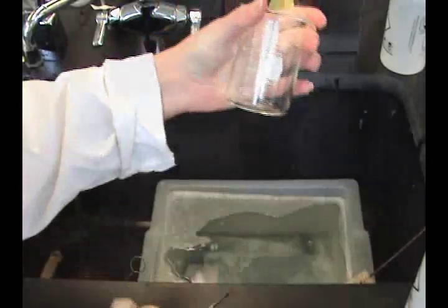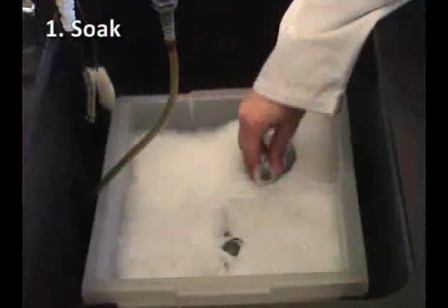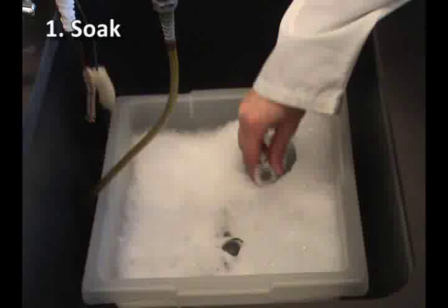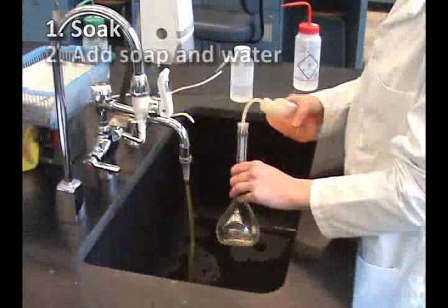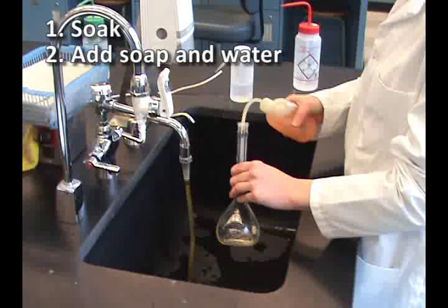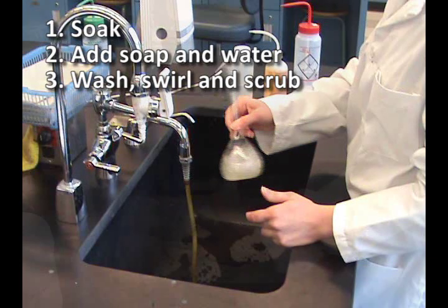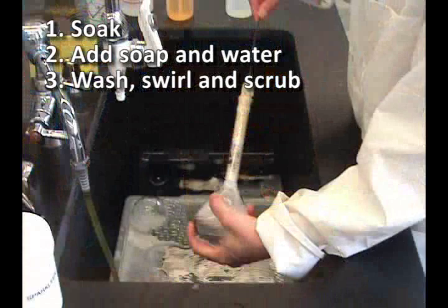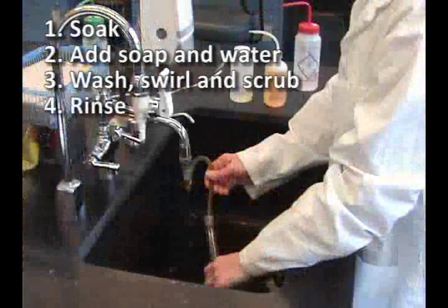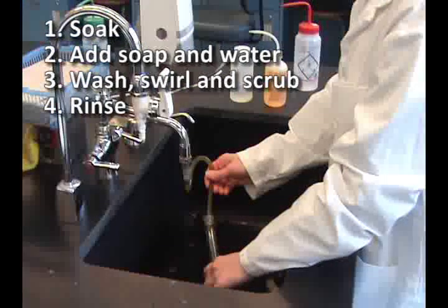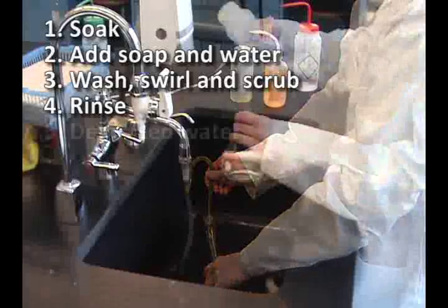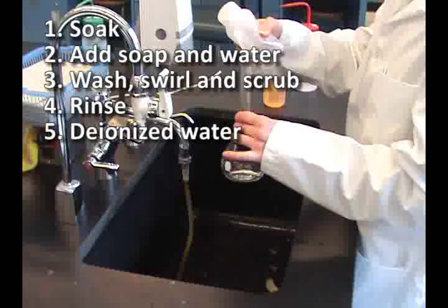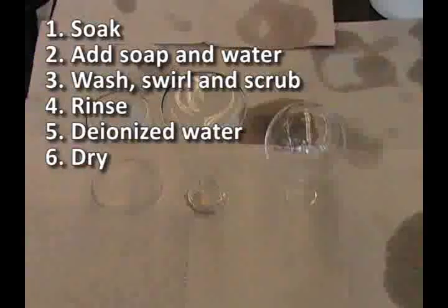Let's review the steps. Soak in SparClean. Add soap and water. Wash, swirl and scrub if needed. Rinse well with tap water. Use deionized water for final rinse. Dry. Now you have clean glassware for experiments.